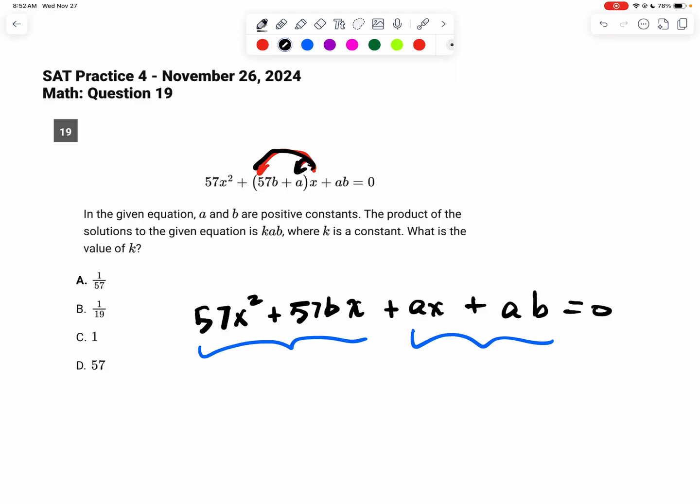the first part has a common factor of 57x, and so when I divide that by 57x, I get x, and when I divide that, I get plus b. And then for the second part, the common factor is a, when I divide that by a, I get x, and here I get plus b. And so this is good news. The good news is that we have the same thing in parentheses here as here.